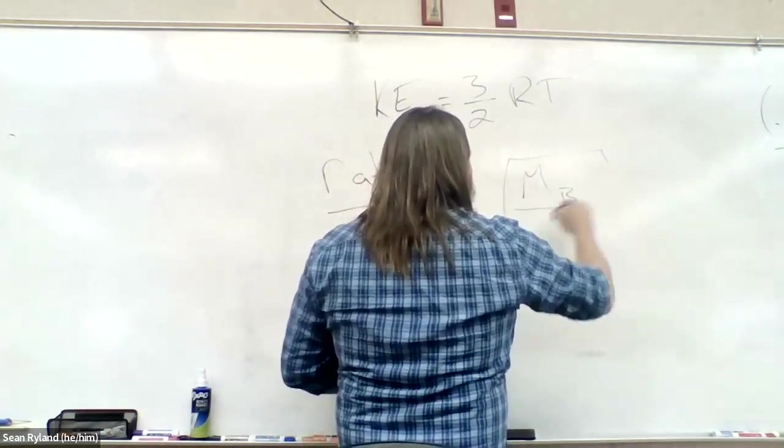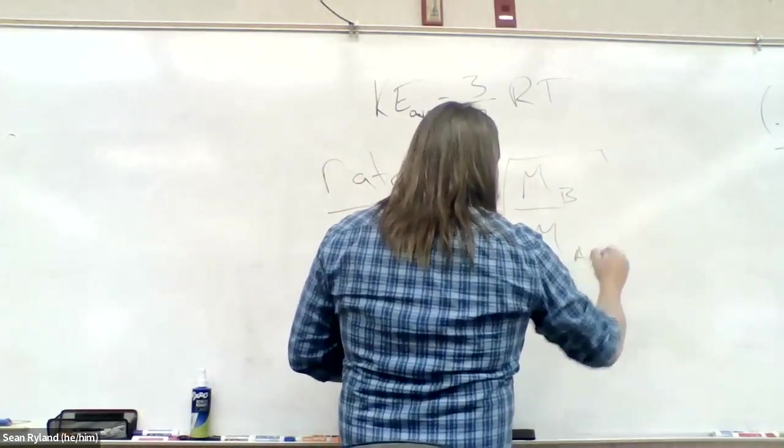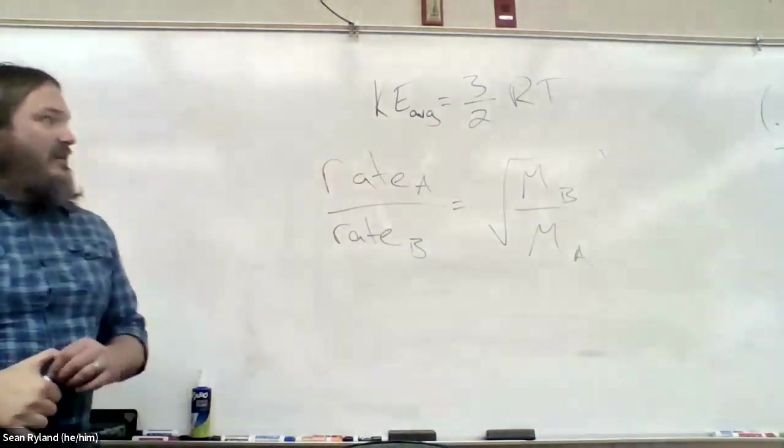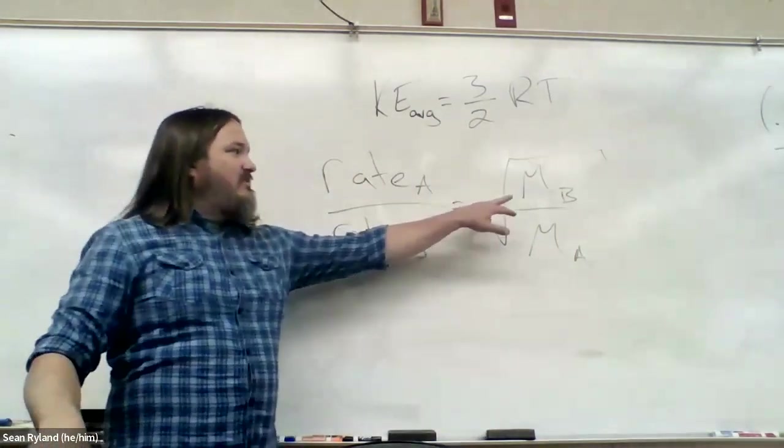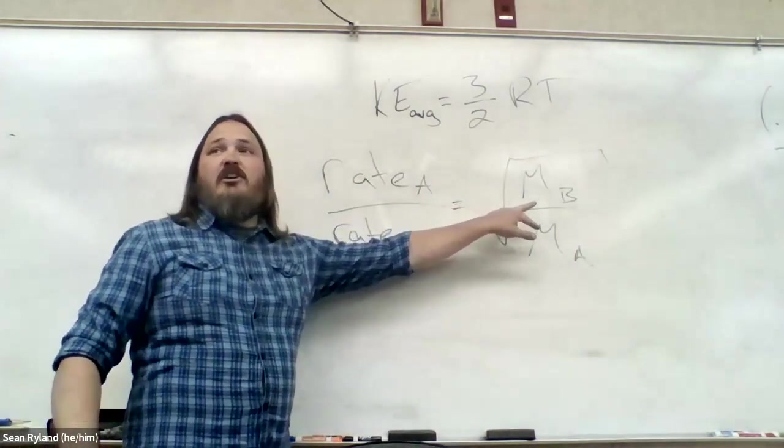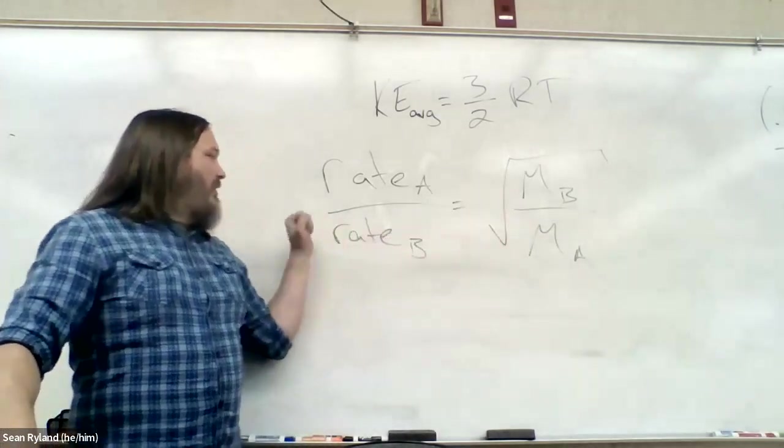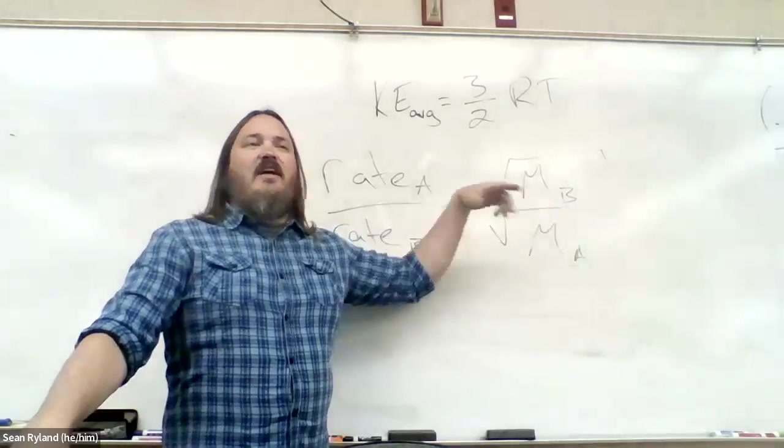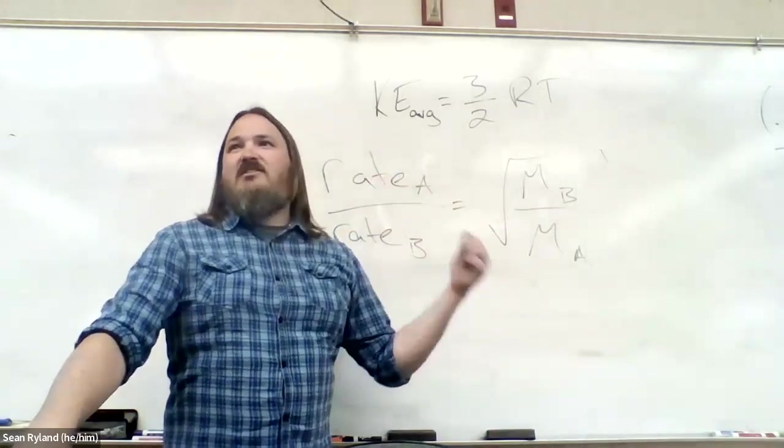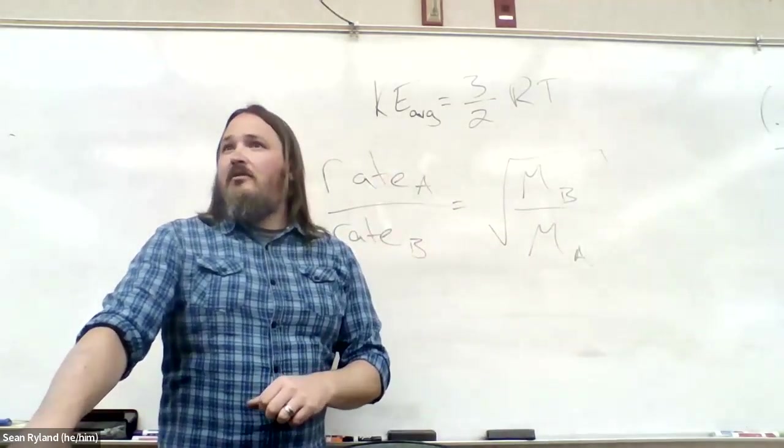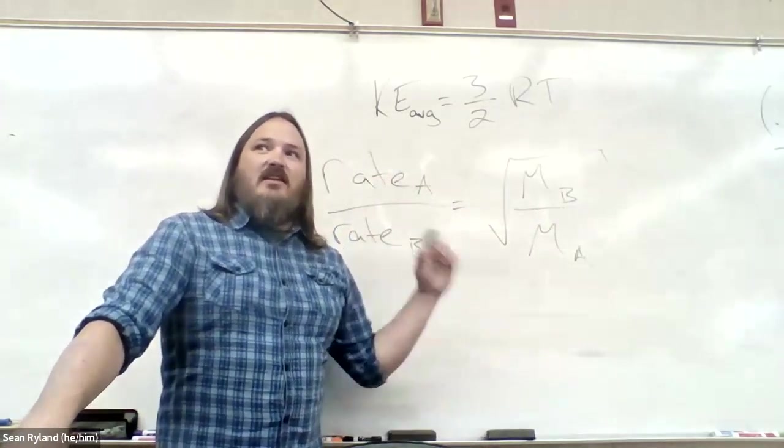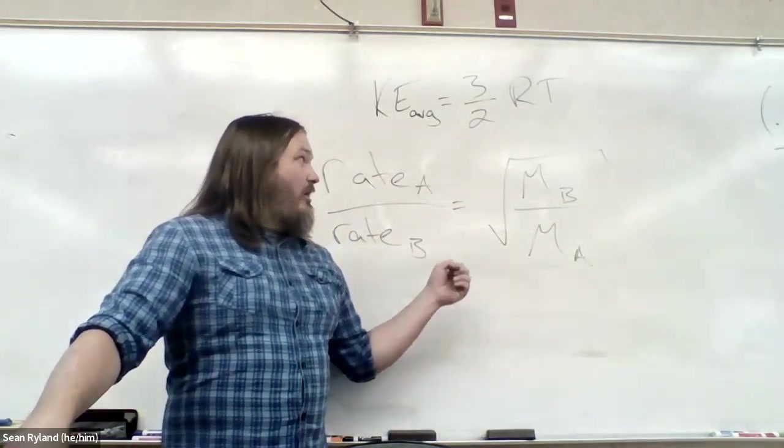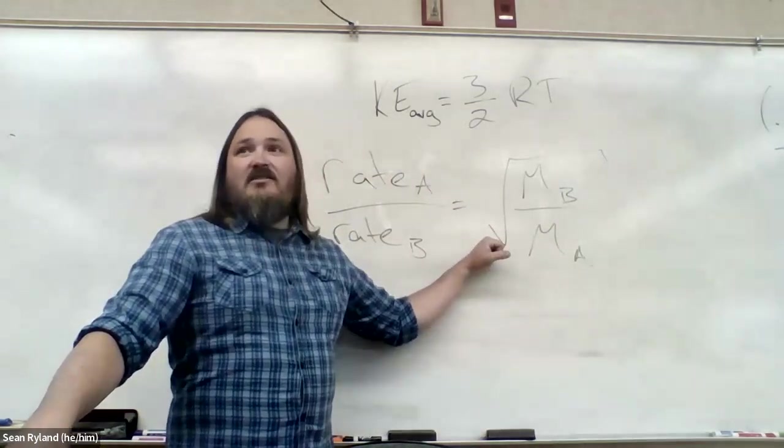And we don't really care that much about true average speed. We care about how quickly they will diffuse based on their masses. So we're going to use this equation for this class. We can say the rate of gas A over the rate of gas B is equal to square root of the mass of B over the mass of A. So one place that people tend to get mixed up here is there's this inverse relationship.